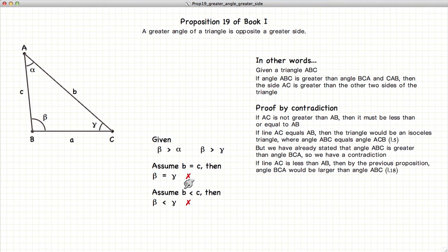Now let's assume that B is less than C. And we know from Proposition 18 that the larger angle is opposite the larger side. So if C is the larger of the two sides, then gamma would be the larger of the two angles. In other words, beta would be less than gamma. But we've already stated that beta was greater than gamma. So that cannot be true, that B is less than C.